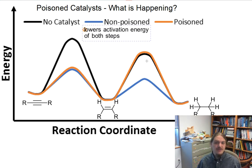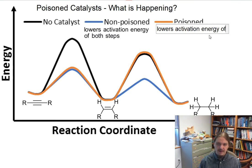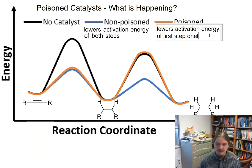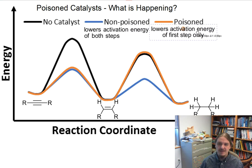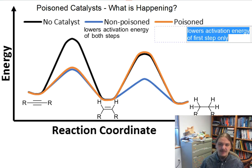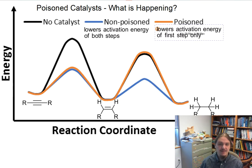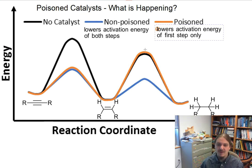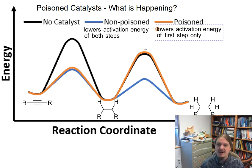In orange I've shown the energy pathway for the poison catalyst. The poison catalyst lowers the activation energy, but only of the first step — it does not lower the activation energy of the second step. That is a big difference between the poison catalyst and a non-poisoned catalyst. The poison catalyst still enables the catalyst to react with the alkyne and lowers the activation energy for hydrogenation of the alkyne, but it doesn't lower the activation energy for hydrogenation of the alkene. It leaves that activation energy high, as if there were no catalyst at all. So this reaction can stop at the alkene because the alkene is now less reactive than the alkyne.